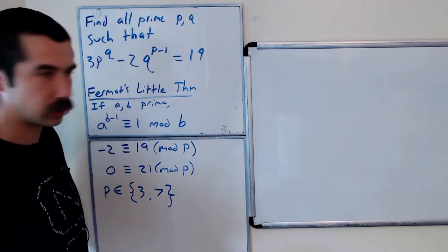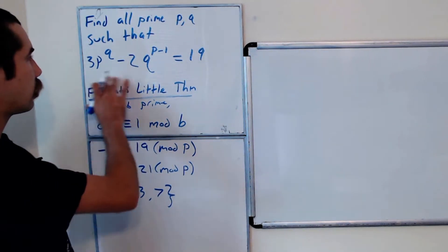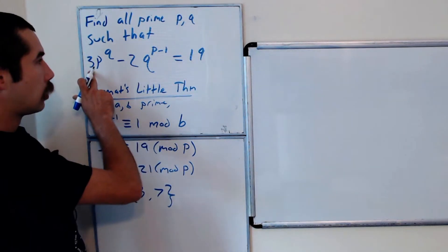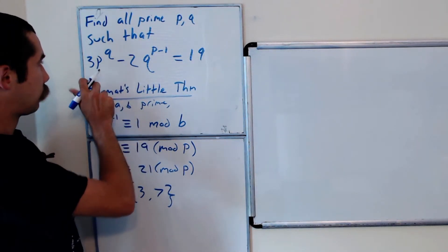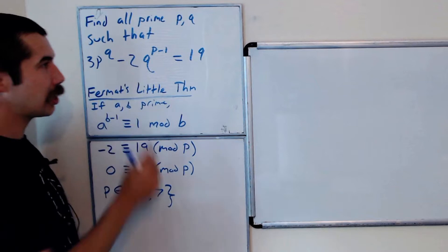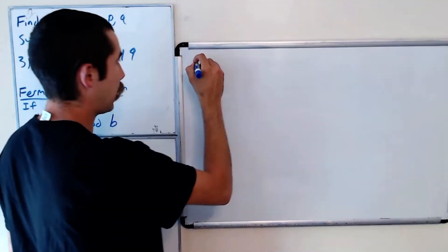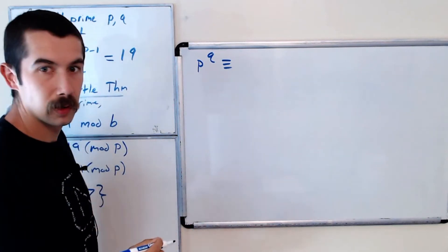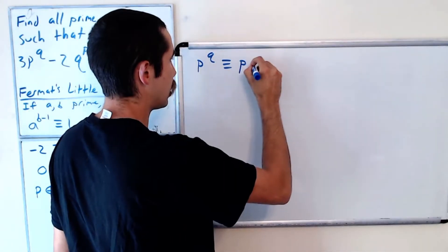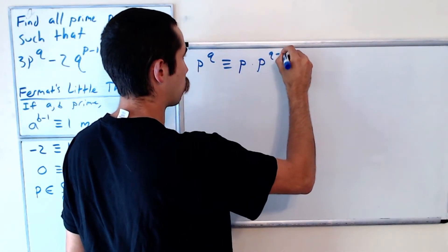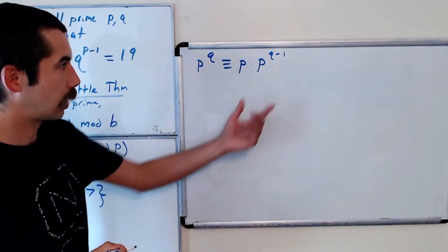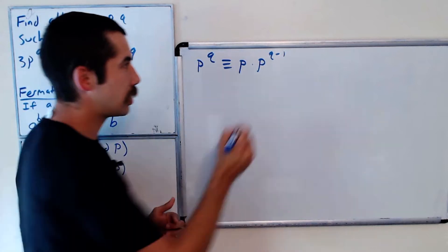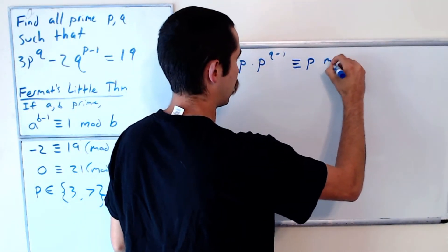Okay, so far so good. Now let's do the same thing mod q. The left-hand side, p^q, so p^q is equal to what? p times p^(q-1). But we know that this is 1 mod q, so this is equal to p mod q.